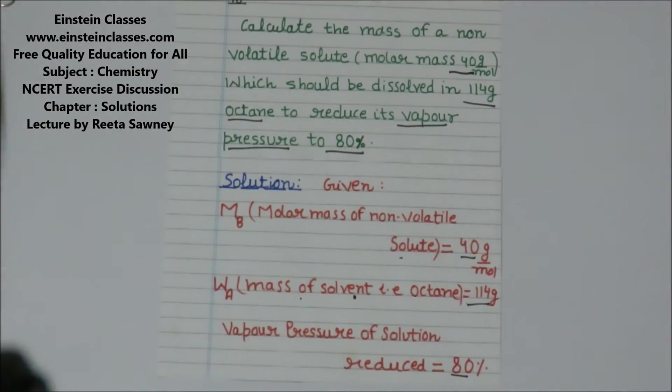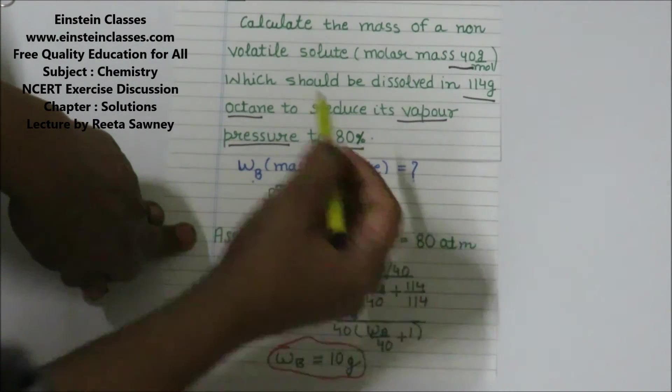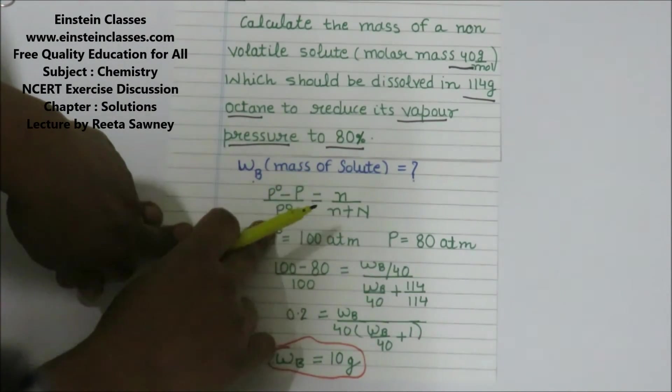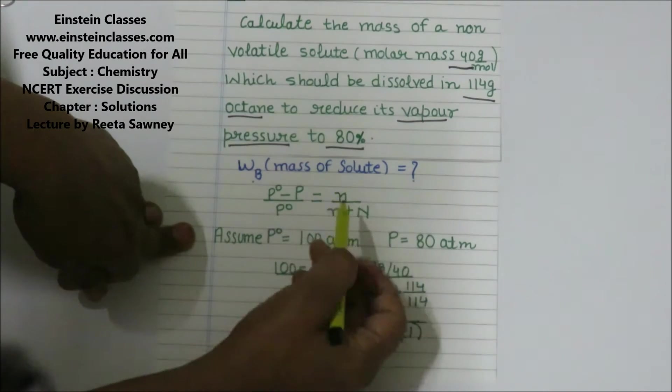Now we are using the relative lowering of vapor pressure: (P⁰ - P)/P⁰ equals n/(n+N), where n is the mole of the solute and capital N represents the mole of the solvent.